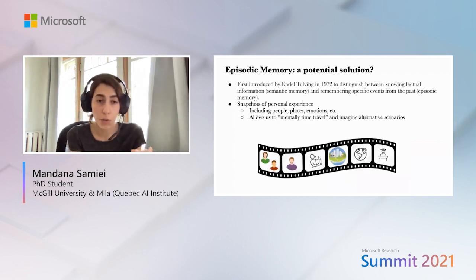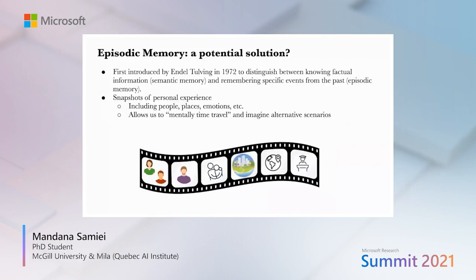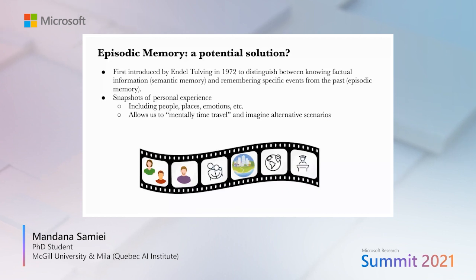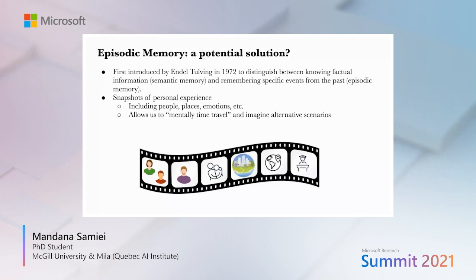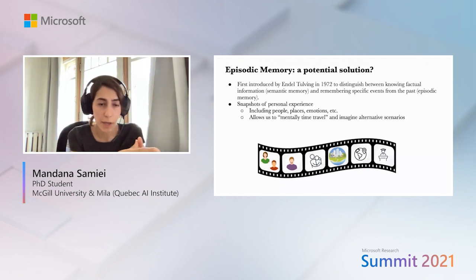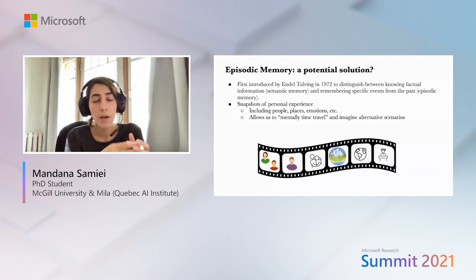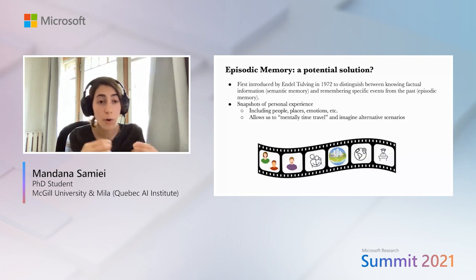So what could be a potential solution to these challenges? The approach we would like to take is partly inspired by the hypothesized role of the hippocampus in decision making and conceptions from episodic memory. The term episodic memory was first introduced by Endel Tulving in 1972 to emphasize the distinction between two types of memory: knowing factual information, known as semantic memory, and remembering events from the past, called episodic memory. Episodic memory contains specific personal experiences including events in our life, people, places, and emotions. We can think of episodic memory as a means to travel through time and recall personal experiences.